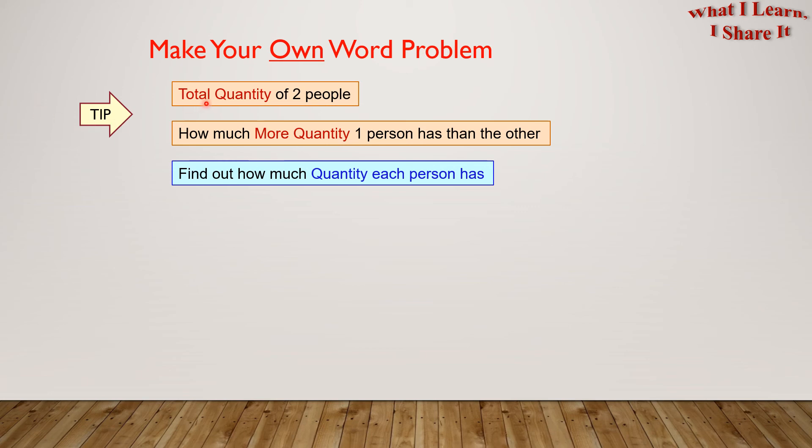For this kind of word problem, you will need to know the total quantity of two people and also know how much more quantity one person has than the other. From this information, we can find out how much quantity each person has. Here's an example.